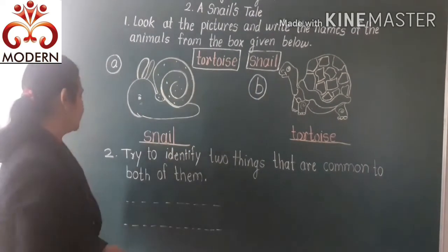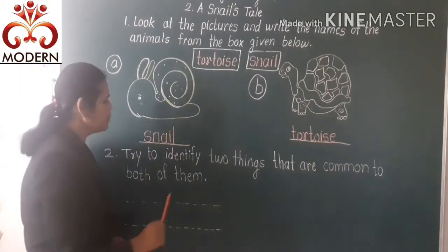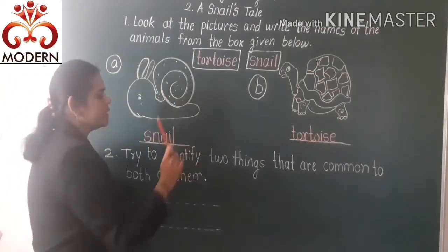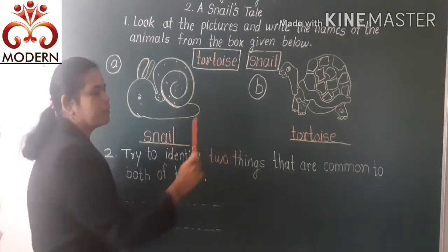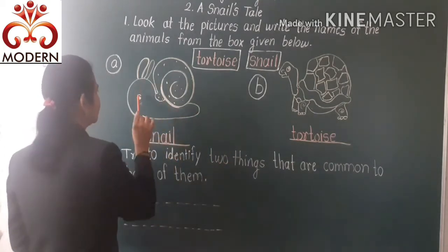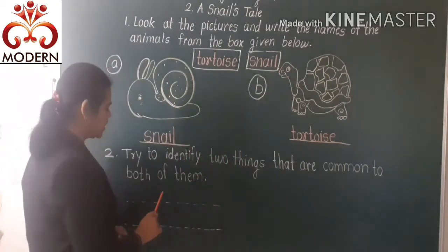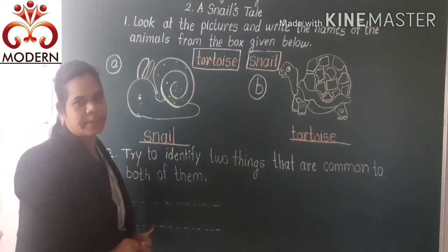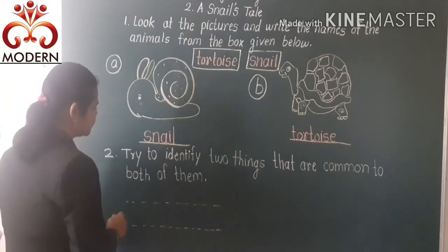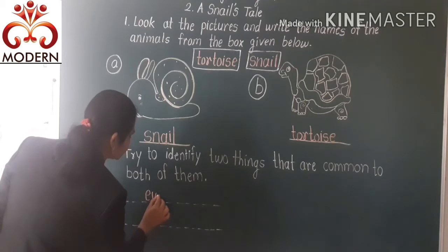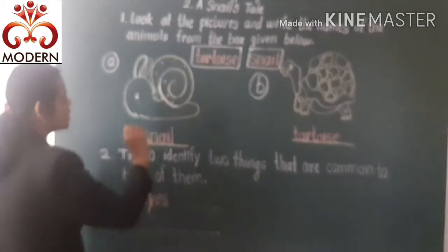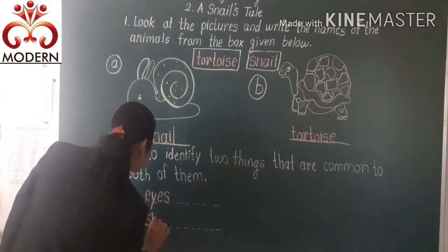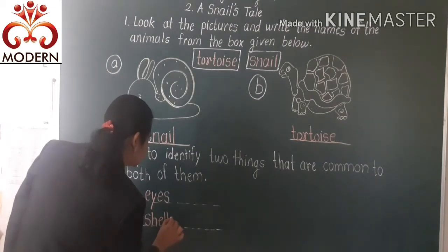Okay, then the next question is: try to identify two things that are common in both of them. Right here — shells. Both animals have shells. And what else is common? Eyes — E-Y-E-S. Eyes. All of them have eyes in common. So right here, shells — S-H-E-L-L.